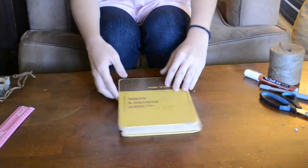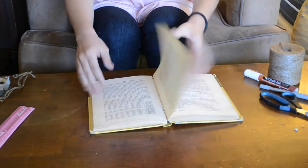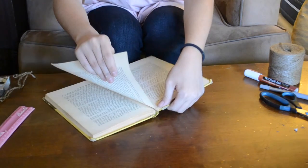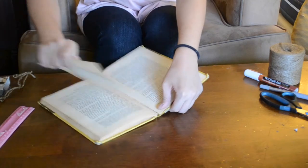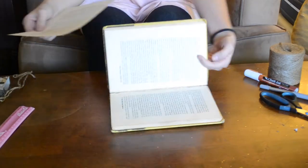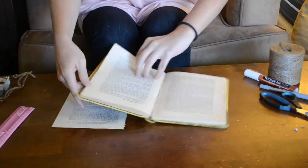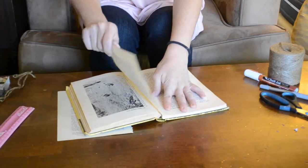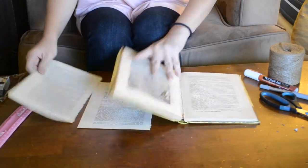The first step is going to be ripping a page out from your book. I'm just going to open it to the center and tear out a page. Let's do two pages. Really easy.